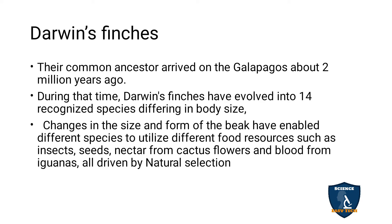Changes in the size and form of the beak evolved, enabling different species to utilize different food resources such as insects, seeds, nectar from cactus flowers, and blood from iguanas — all driven by natural selection. The beak size and form was changed according to the food they consumed.